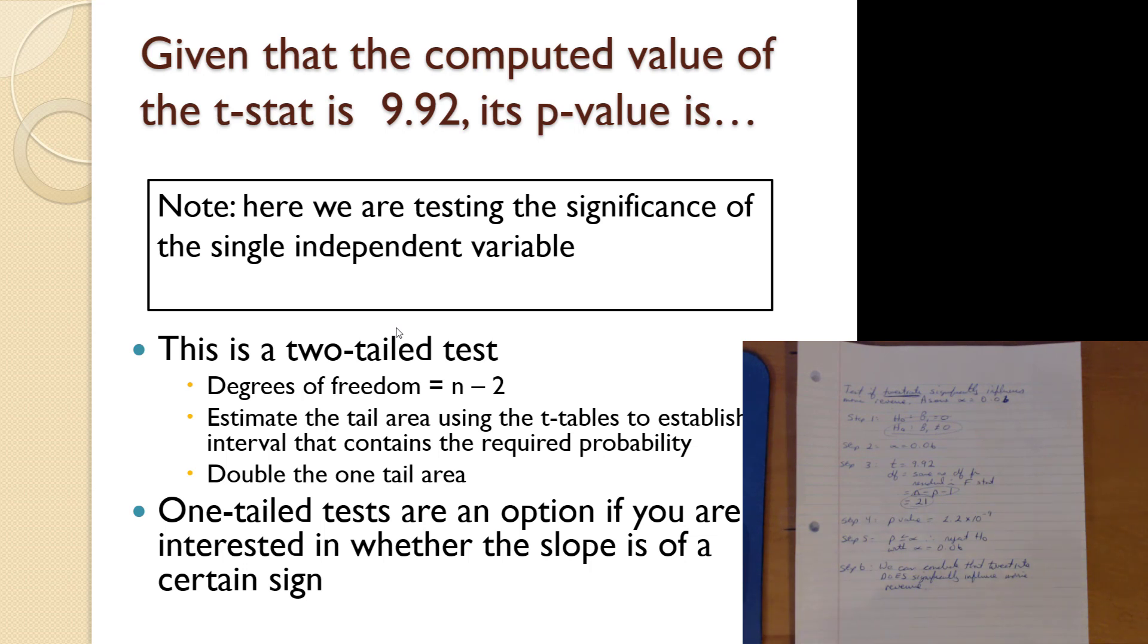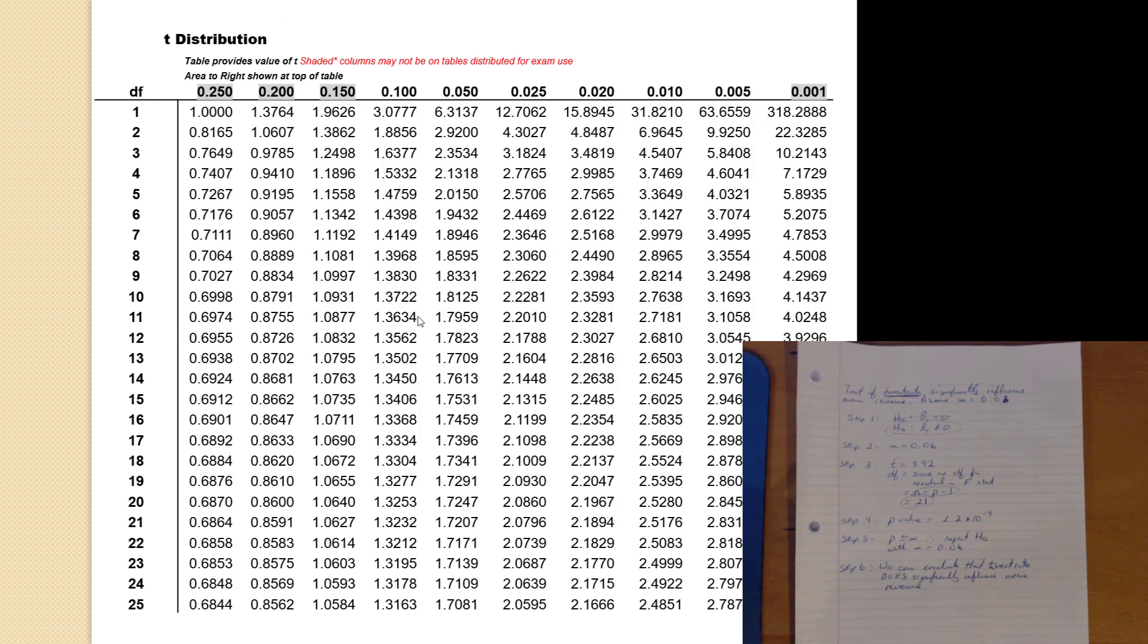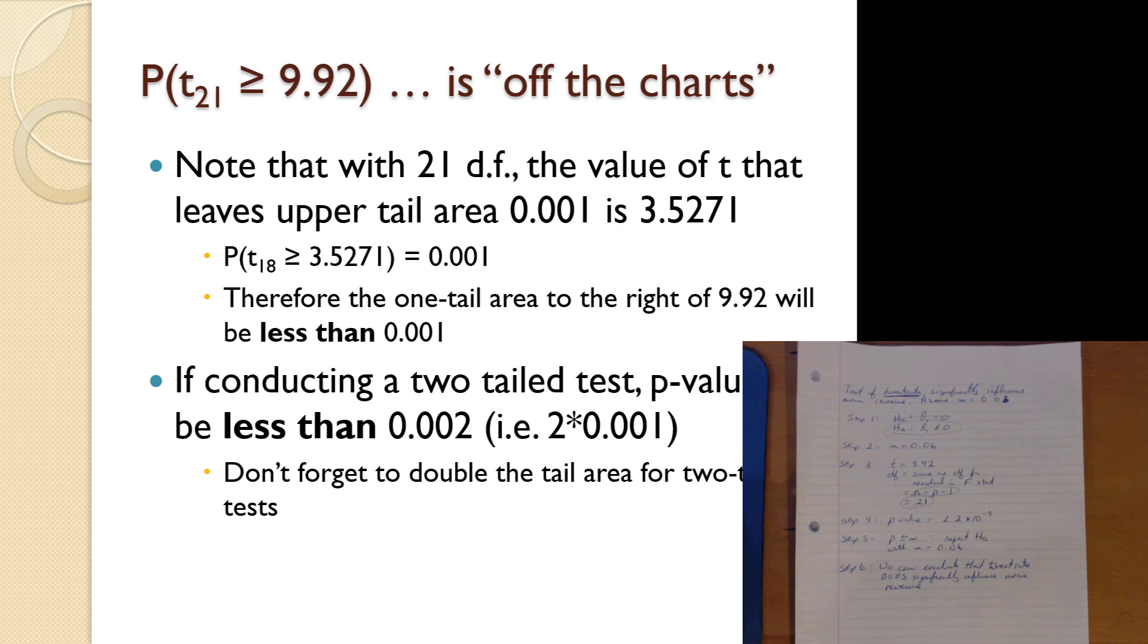We have degrees of freedom and so on. Now, one-tail tests are an option, right? If you want to see if the slope is of a certain size, positive slope or negative slope. And in that case, the p-value would be just a slightly bit different. You'd need to go back to the tables or use Excel. And then you would just find the probability that you get a specific value bigger or less than a particular number.